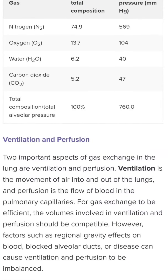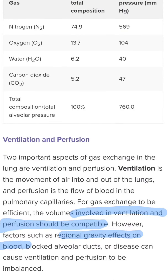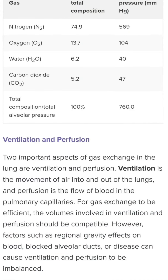For gas exchange to be efficient, the volumes involved in ventilation and perfusion should be compatible. However, factors such as regional gravity effects on blood and blocked alveolar ducts, as well as some diseases, can cause ventilation and perfusion to be imbalanced. In an ideal condition, a normal healthy human being should have ventilation and perfusion in a compatible manner.